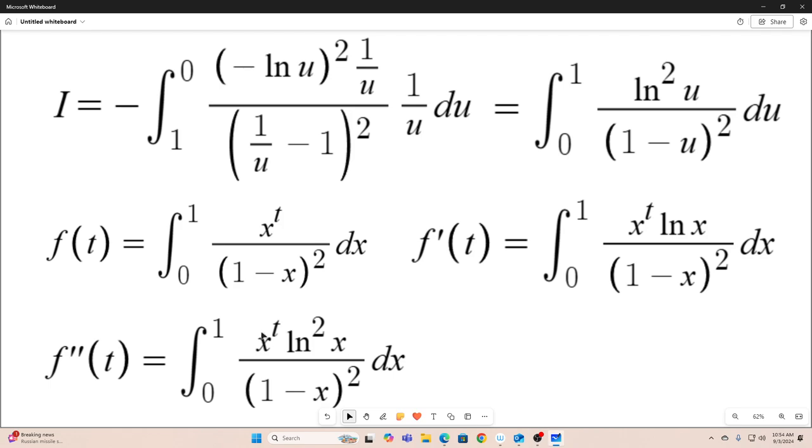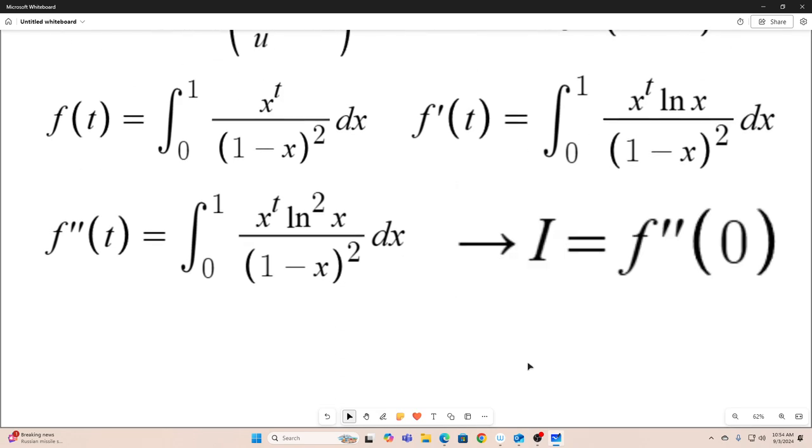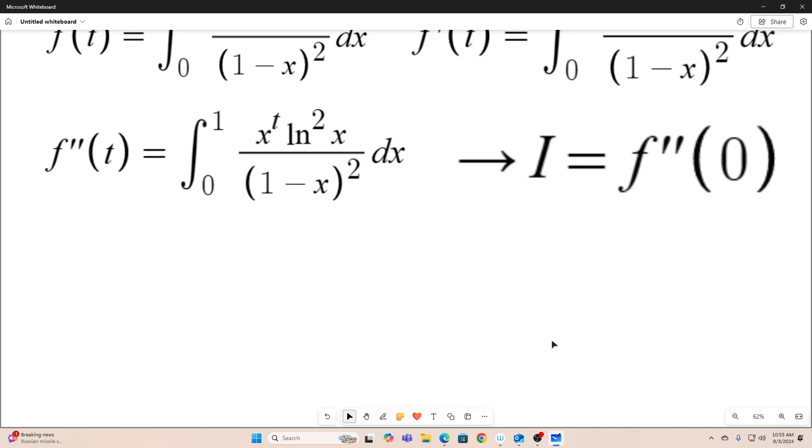And now, you'll notice that if we evaluate this function right here, f double prime of t, at the point t is equal to 0, we have the value of our original integral. So let's just state that. I is equal to f double prime at 0.